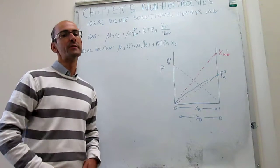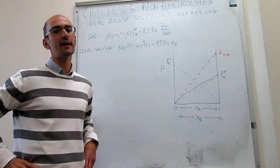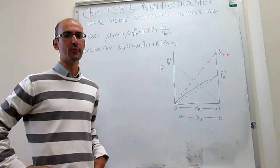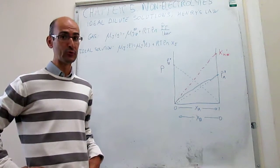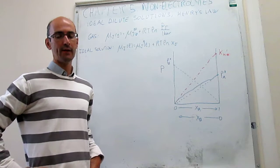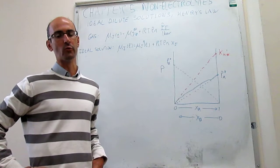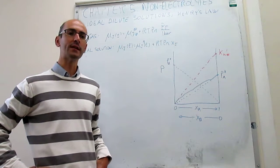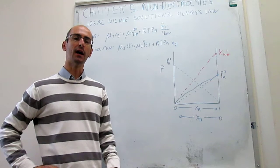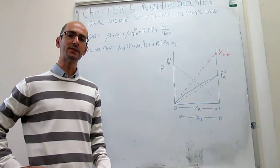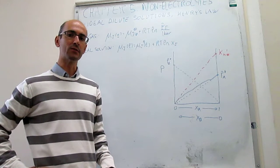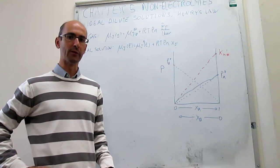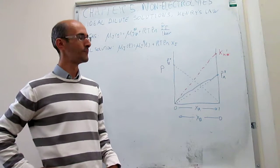In this chapter, we're interested in seeing how to write chemical potentials for solutions. That will be interesting when we look at concepts like chemical equilibrium, and when we study how the properties of a solution change the freezing point, the boiling point, and so forth.